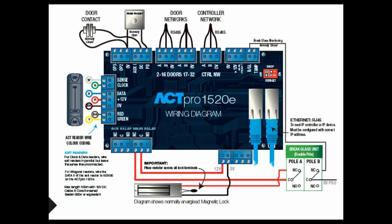Let's have a quick look at the ACT 1520 board first of all. There's not much to change here. On the top right you've got your two-port DIP switch. Just make sure that DHCP is set to the off position. I find it good practice to set it to off, power down, power back up, and then we're ready to go.